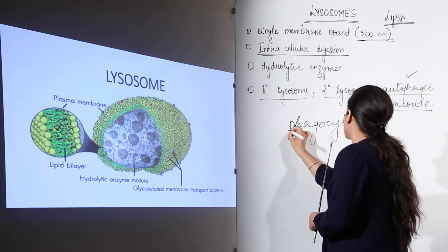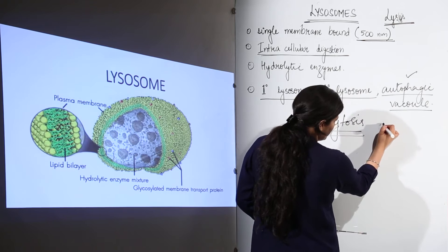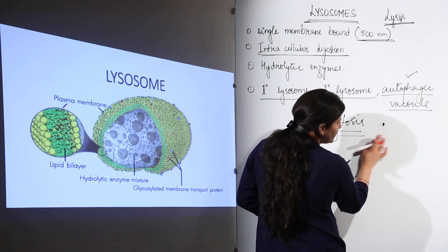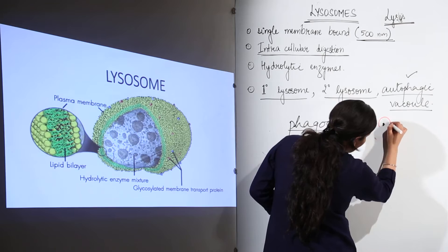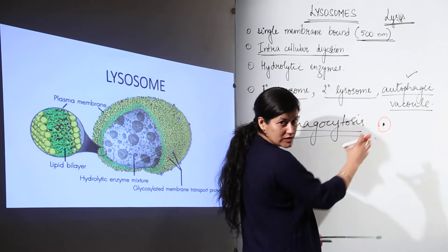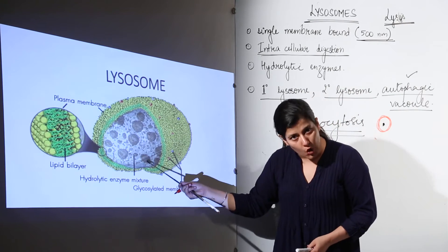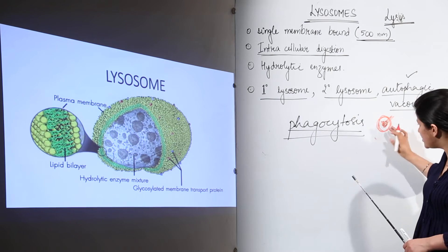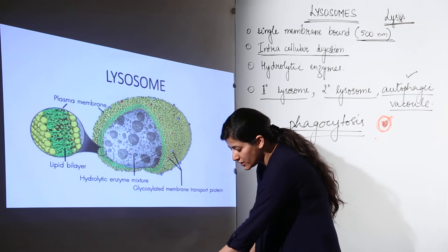If it is a solid particle, the cell performs phagocytosis. A phagocytic vacuole comes to the food particle, engulfs it, and forms a phagocytic vacuole. This vacuole, which has a membrane around it, comes in contact with the lysosome. The lysosome merges with the membrane of the vesicle, and the solid particle to be digested is taken up inside the lysosome, where it is digested.